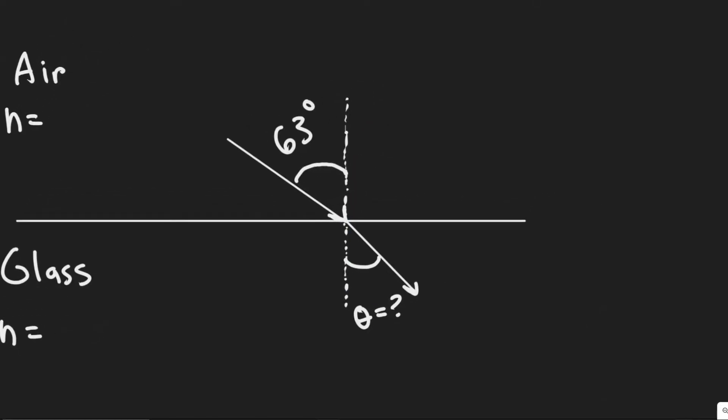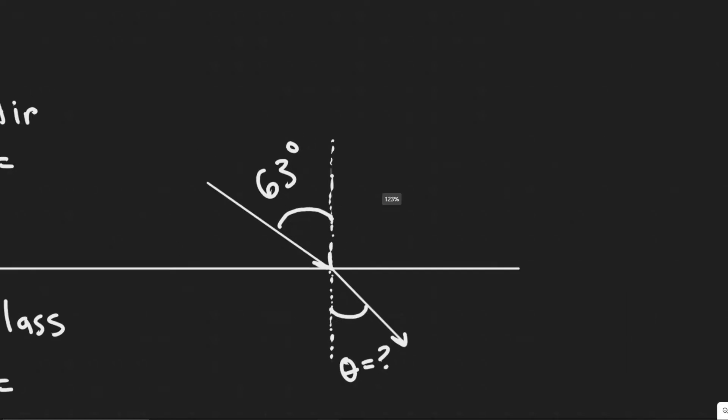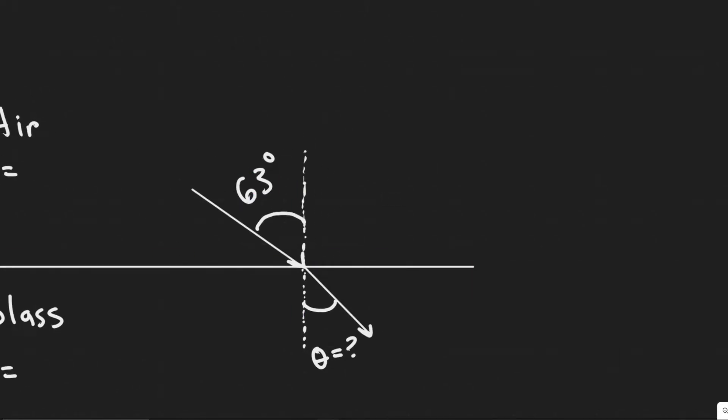As always, you want to draw what's going on. Essentially we have this flashlight, and we know it's going to be shining this beam of light. You can imagine this line is the beam of light.